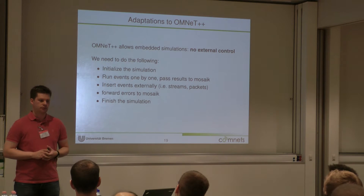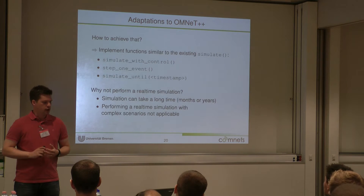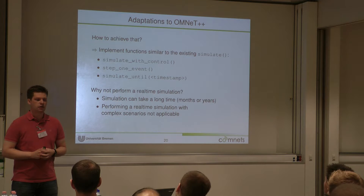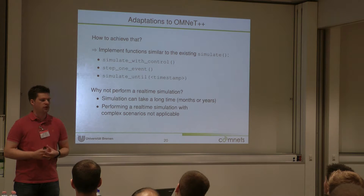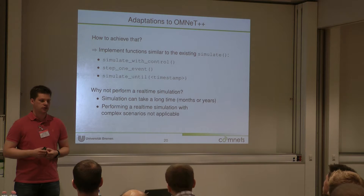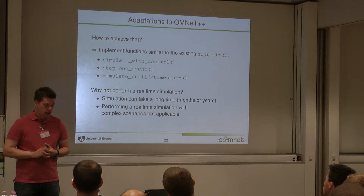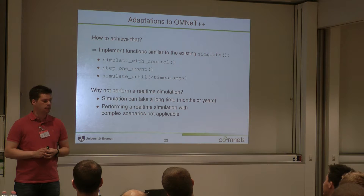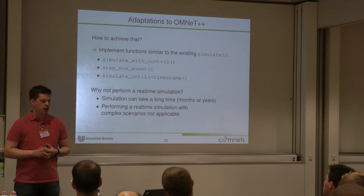This corresponds to the Mosaic API shown before. We thought about implementing functions comparable to the existing simulate function: start a simulation with simulate-with-control, step forward one event, or use a simulate-until function to simulate until a certain time step. One may ask why not just use real-time simulation with the real-time mode and communication like the embedded example in OMNET. The point is, simulating a smart grid may take a very long time — we want to simulate maybe half a year or a year of a smart grid scenario to get the influence of seasonal effects.